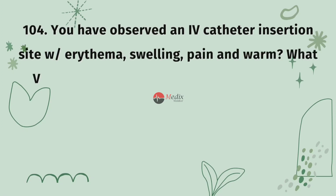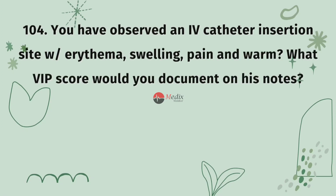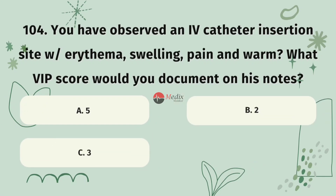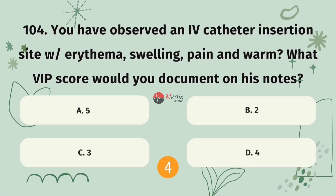Question 104. You have observed Ann's catheter insertion site with erythema, swelling, pain, and warmth. What VIP score would you document in his notes? Option A, 5. Option B, 2. Option C, 3. Option D, 4. The correct answer is C.